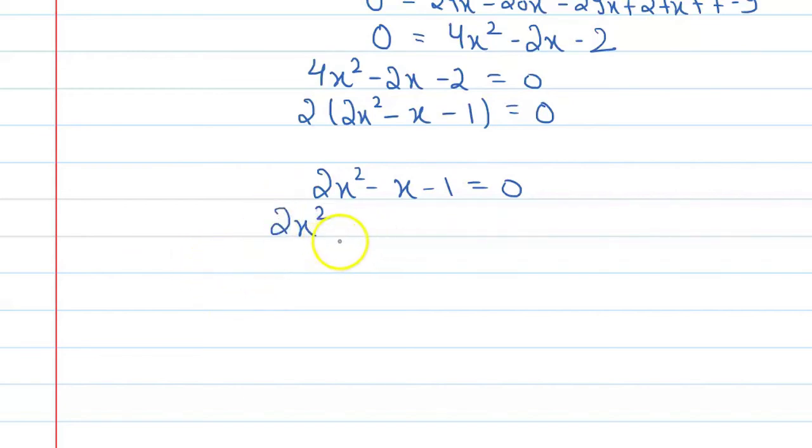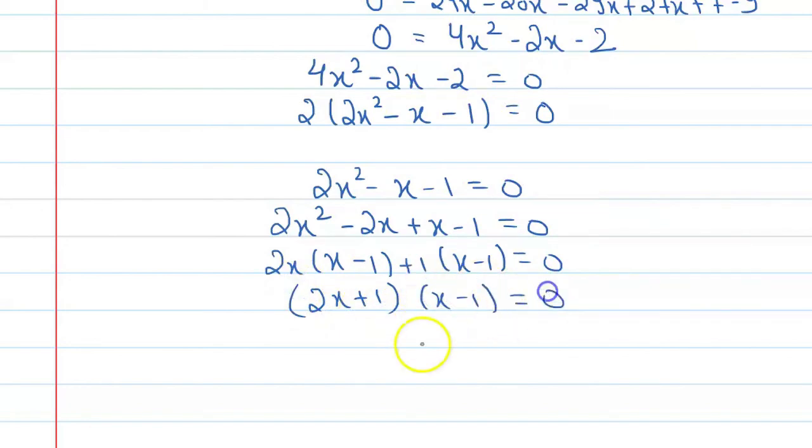You will factorize by middle term split method: 2x square minus 2x plus x minus 1 equals 0. We will get 2x times x minus 1 plus 1 times x minus 1 equals 0. So 2x plus 1 and this is x minus 1 equals 0. Okay, so 2x plus 1 equals 0, we will get x equals minus 1 by 2. x minus 1 equals 0, we will get x equals 1. Okay.